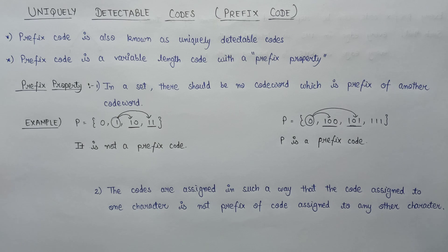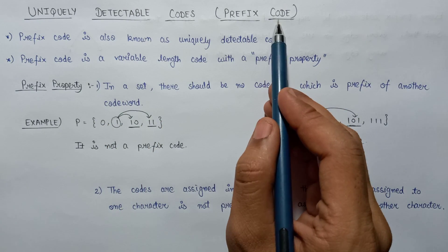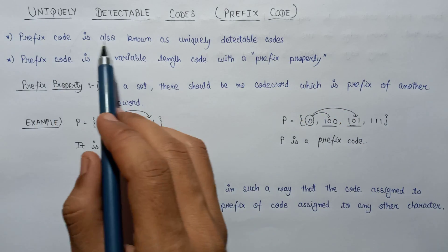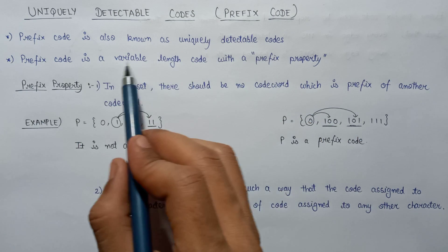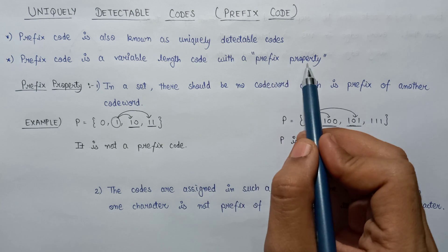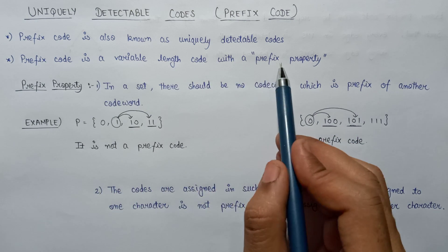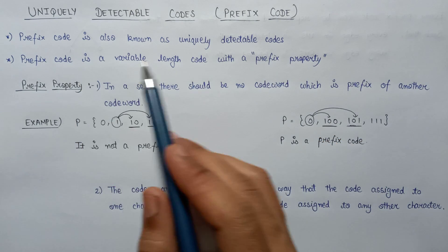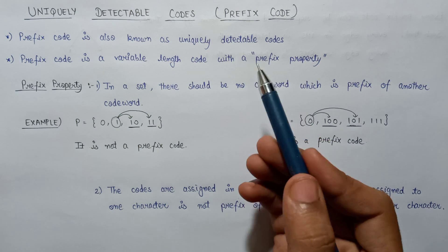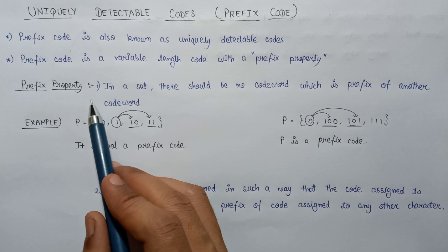In this lecture we are going to learn about uniquely decodable codes, or prefix codes. A prefix code is also known as a uniquely decodable code. A prefix code is a variable length code with the prefix property, so a prefix code must follow the prefix property. Let's discuss this prefix property in more detail.